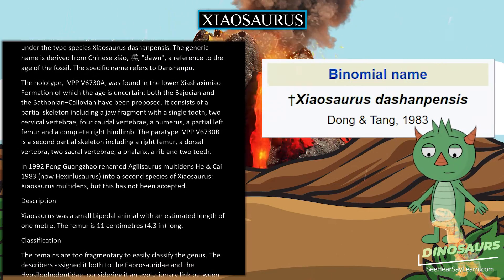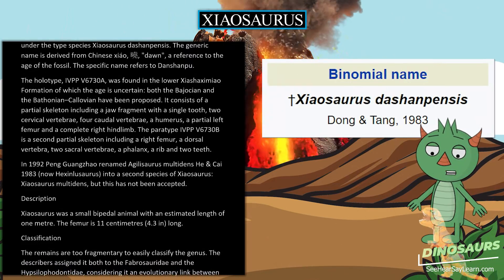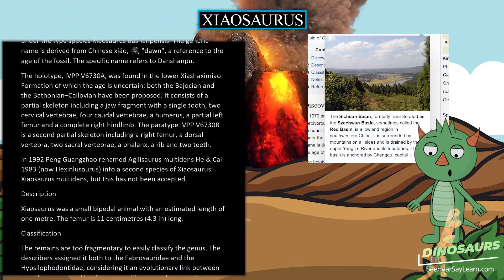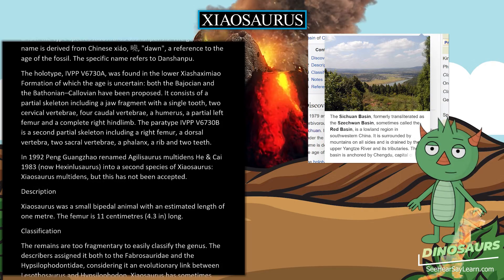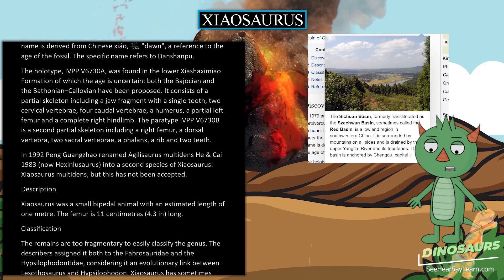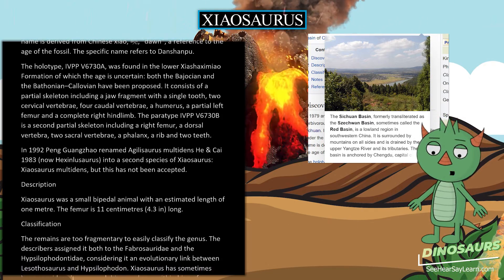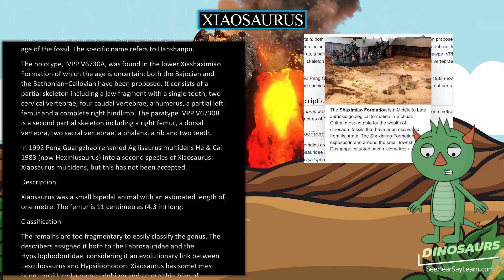Shiasaurus was a small bipedal animal with an estimated length of 1 meter. The femur is 11 centimeters long.